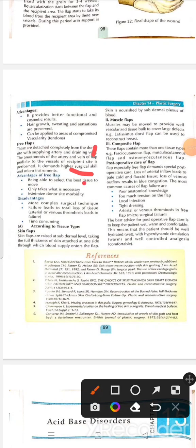When selecting a free flap, one should be able to select the best tissue to move and only use it when necessary. Disadvantages include being time-consuming and risk of failure. According to tissue type: skin flaps are raised at the subdermal level taking the full thickness of skin, attached at one side through which blood supply enters. Muscle flaps provide well-vascularized tissue to cover larger defects. Composite flaps contain more than one tissue type.